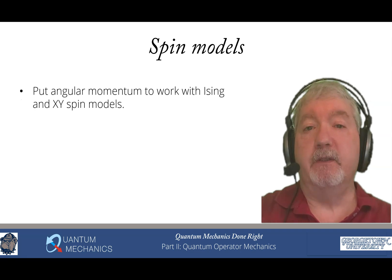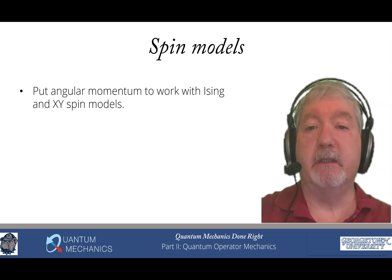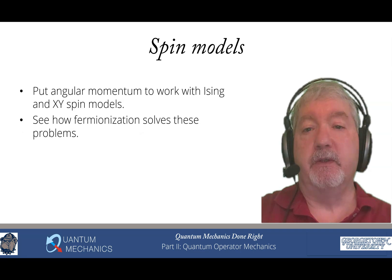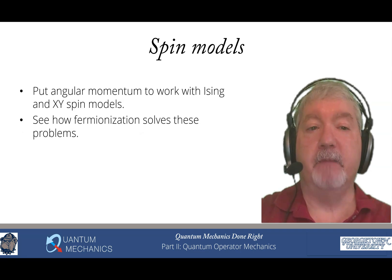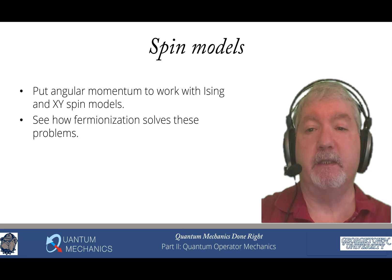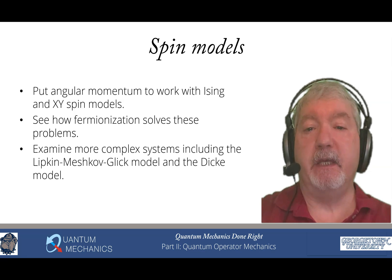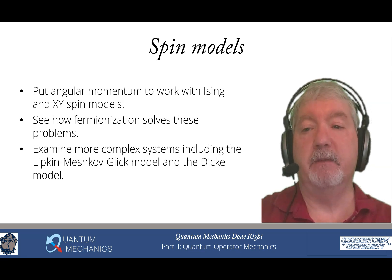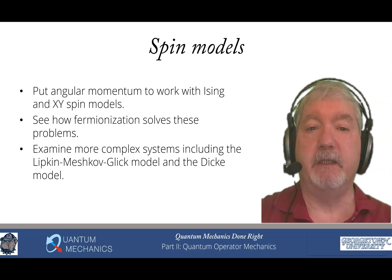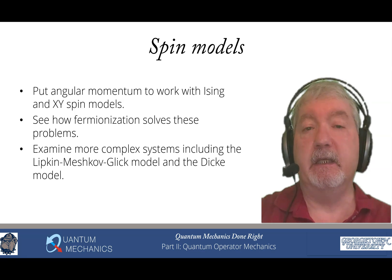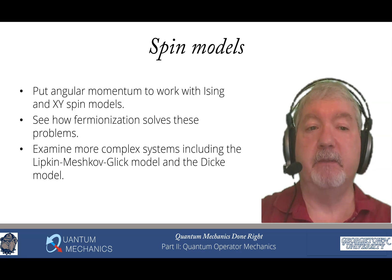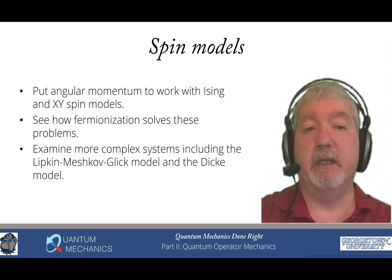We then move on to interacting spin models that allow us to put our angular momentum to work. We introduce the Ising model and the XY model, and use fermionization to solve these models. This brings us into our first foray into second quantization, looking at fermionic operators. We then examine more complicated systems, including the Lipkin-Meshkoff-Glick model, which was applied in nuclear physics, and the Dicke model, which is something actively being explored now in ion traps.